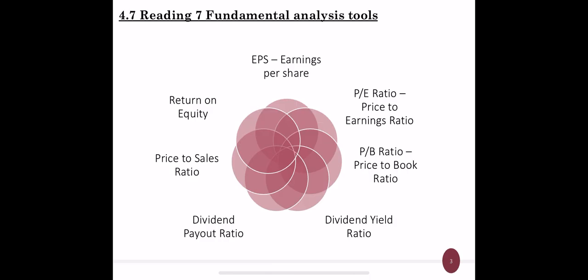For that, there are seven tools to aid our investment decisions. They include: EPS (earnings per share), price to earnings ratio, price to book ratio, dividend yield ratio, dividend payout ratio, price to sales ratio, and return on equity. Based on these tools we'll find out whether a particular stock is overvalued or undervalued. Overvalued stocks may fall down at any time, while undervalued stocks have more growth potential.